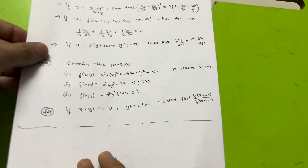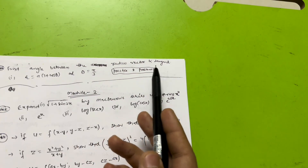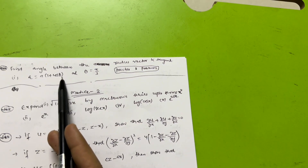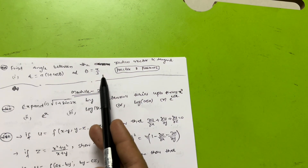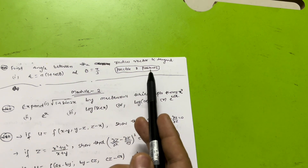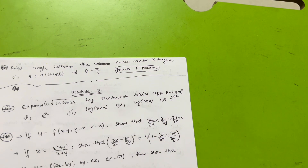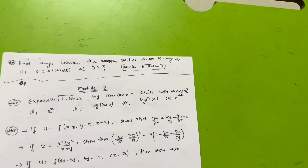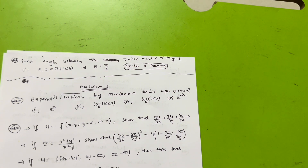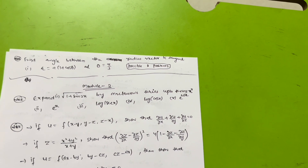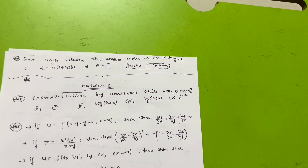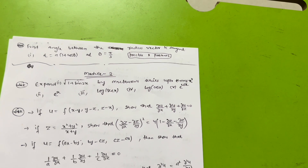The last question of Module 1: find the angle between the radius vector and tangent for r = a(1 + cos θ) at θ = π/3. You can practice two problems from previous question papers, which I will upload on my Instagram account. From Module 1, go through both chapters. In the other modules, focus only on the first chapter, except Module 5 where you must again go through both chapters.